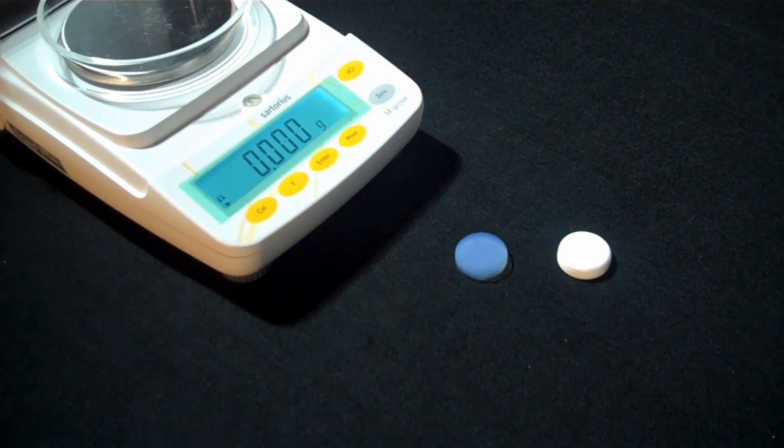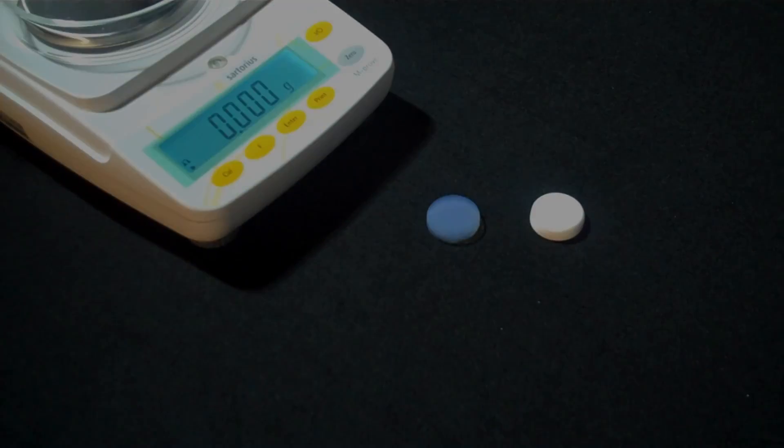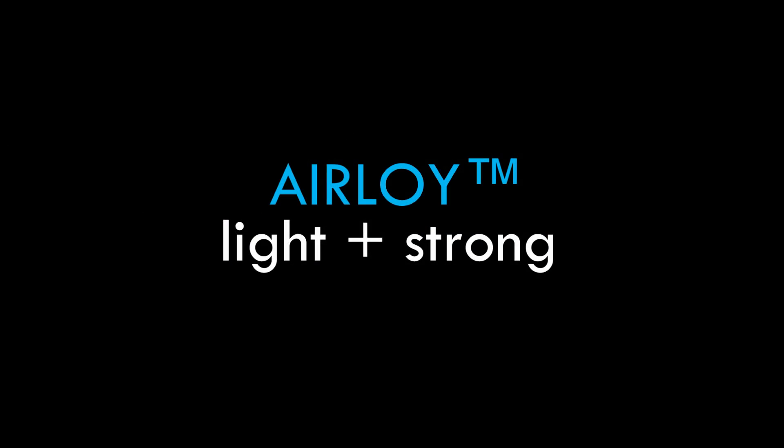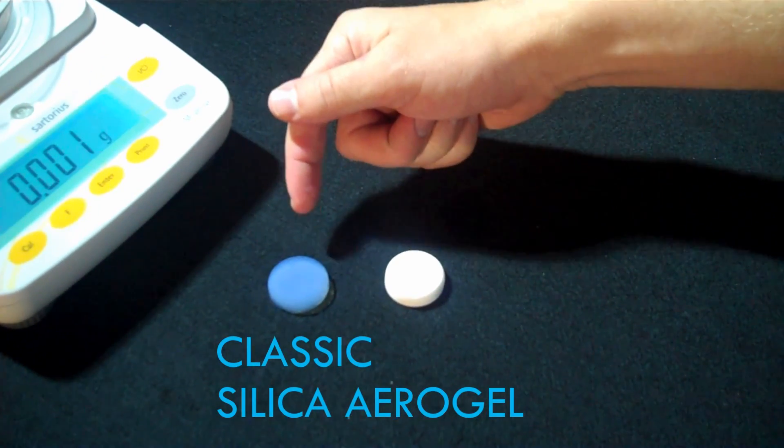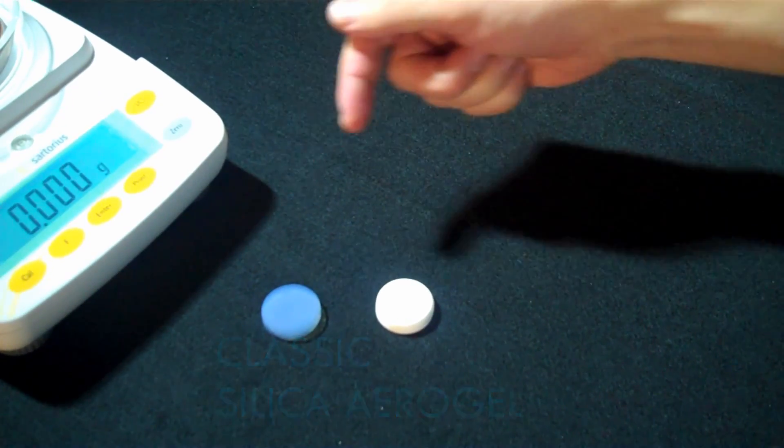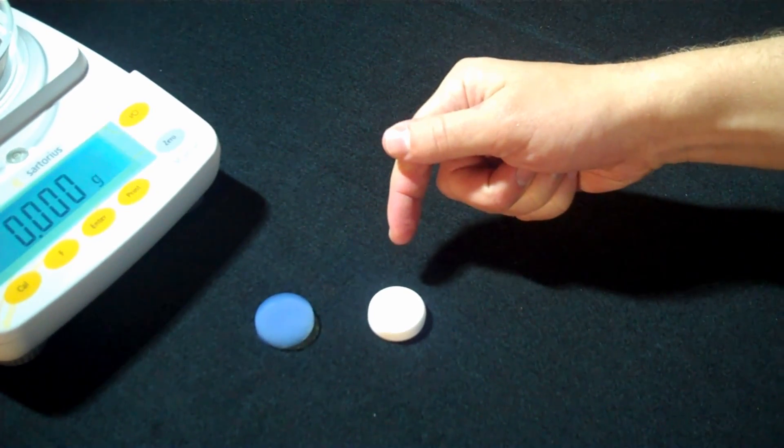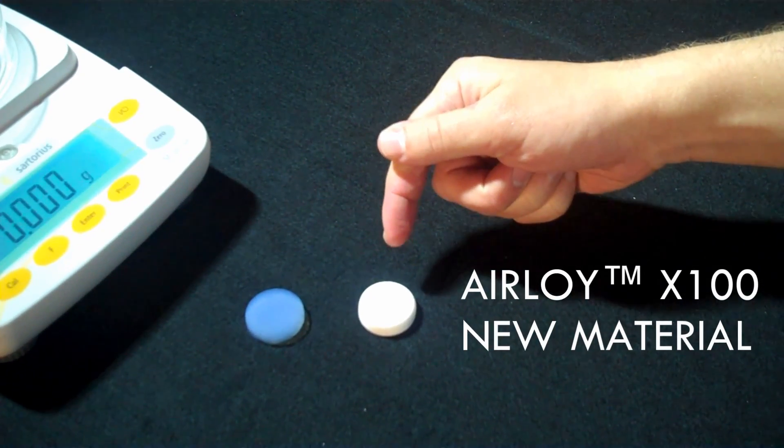Today, we're showcasing a new class of mechanically robust, ultra-strong aerogels called airloys. On the left, we have a one-inch disc of classic silica aerogel. This is the holographic blue-looking, super-insulating material of NASA lore. And on the right, we have a similarly-sized one-inch disc of a new material called airloy X100.